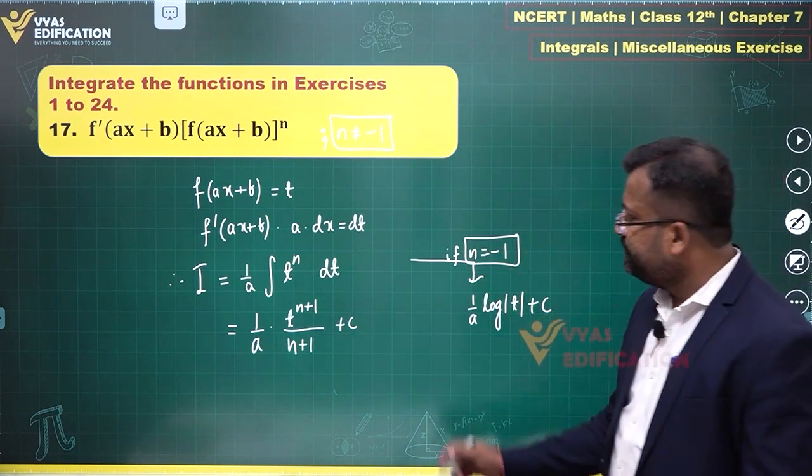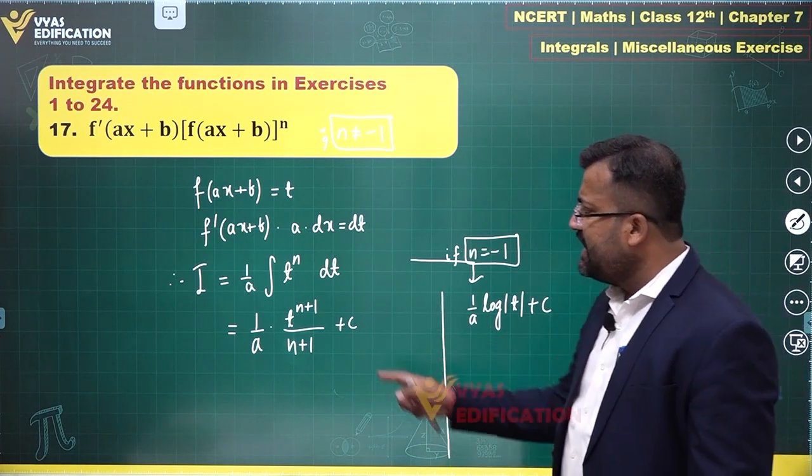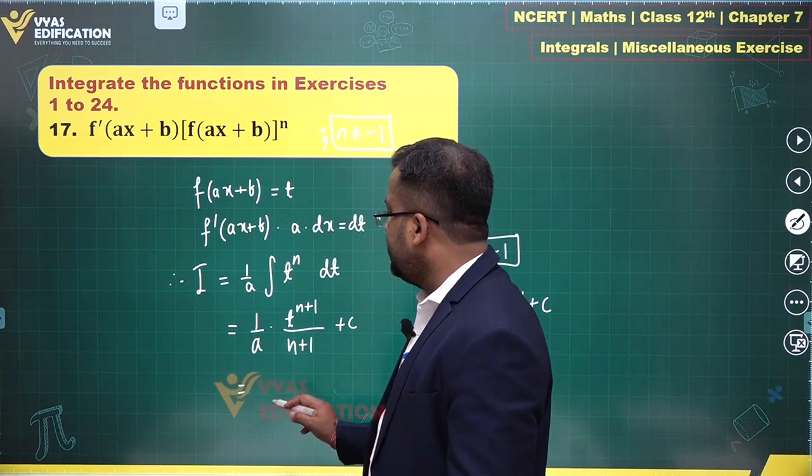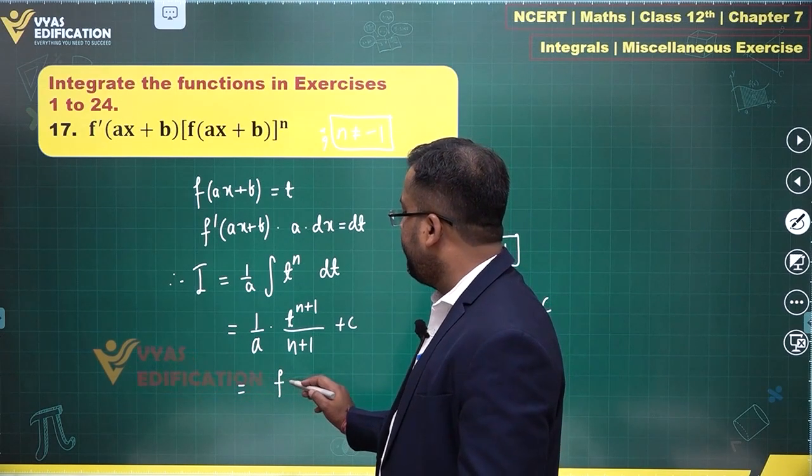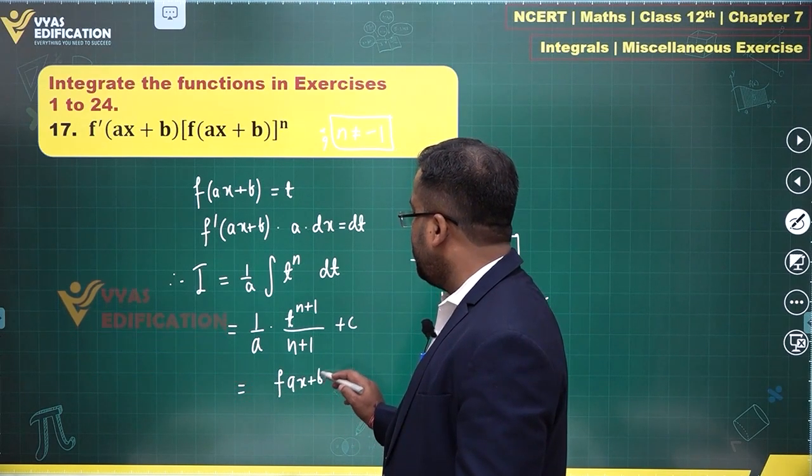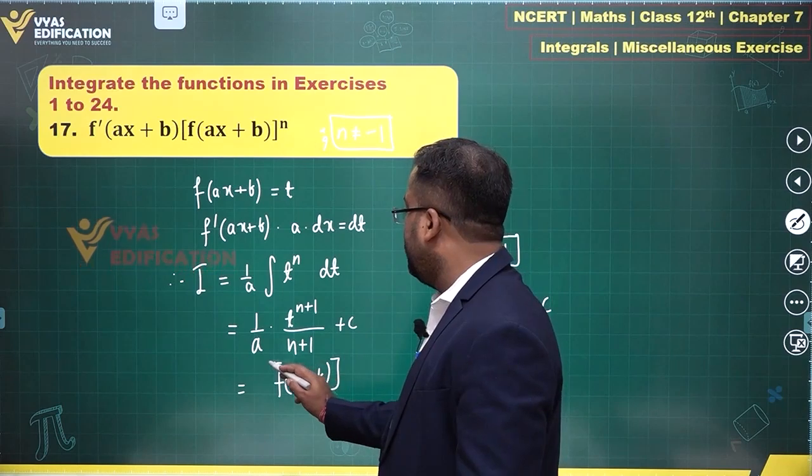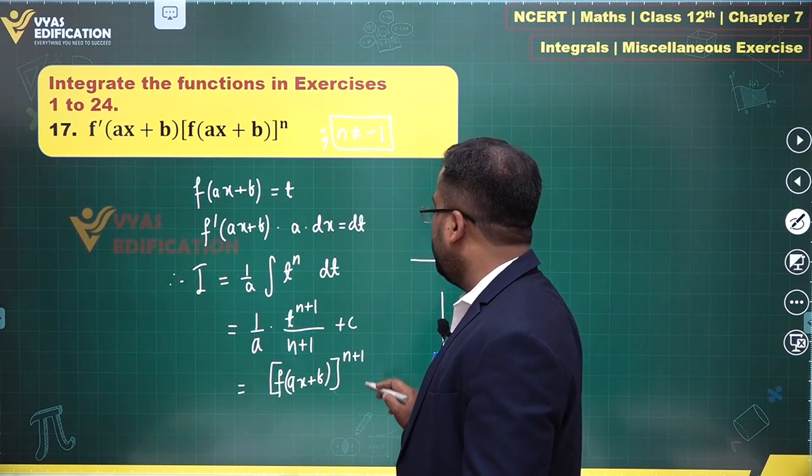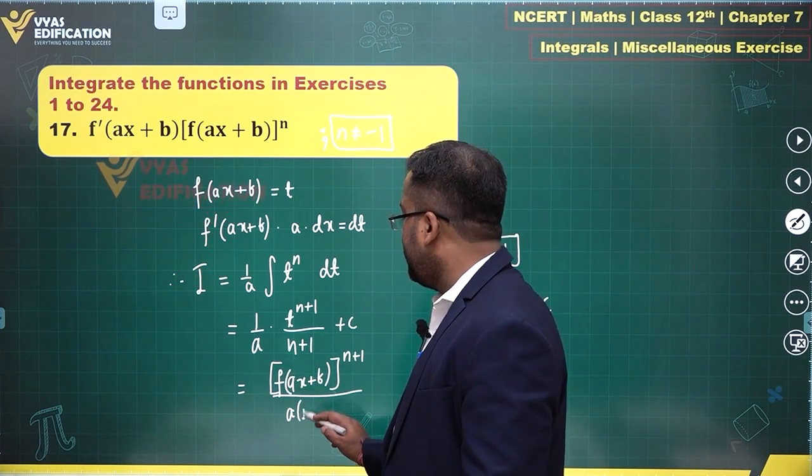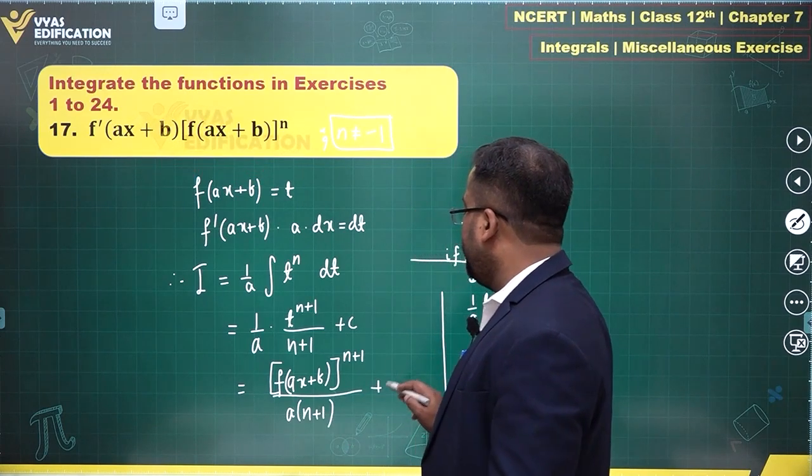So you know both the answers, and then simply substitute the value of t. This is t: t is f of ax plus b power n plus 1 upon a times n plus 1 plus a constant.